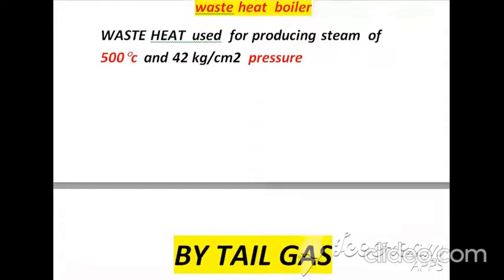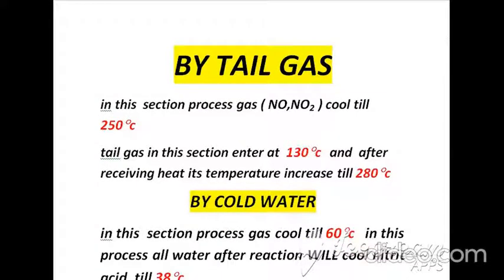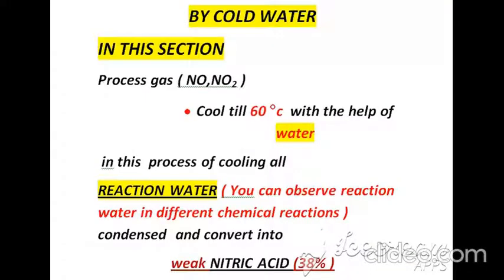The second cooling method is by tail gas. In this section, process gases are cooled to 250°C. The tail gas enters at 130°C and, after receiving heat, exits at 280°C.